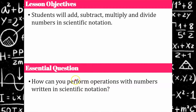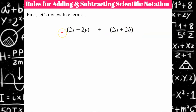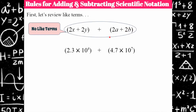We're going to apply what we already know about like terms to do this. Back when you learned about algebraic expressions and how to combine like terms, you would analyze and realize that 2x plus 2y plus 2a plus 2b has no like terms — to be like terms, they have to have the same variable with the same exponent. Since there are four different variables, there's nothing you can do here.